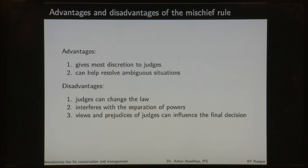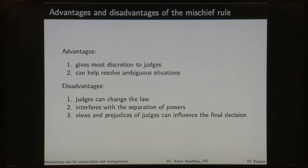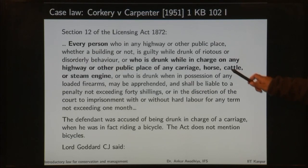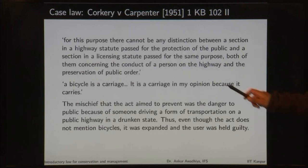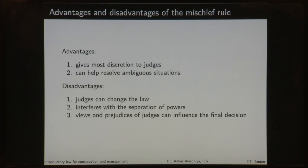The mischief rule gives the most discretion to judges and can help resolve ambiguous situations. However, it permits judges to change the law — in Quirkery versus Carpenter, the law did not mention bicycles but the judge ruled a bicycle is a carriage, effectively changing the law. This interferes with the separation of powers, and the views and prejudices of judges can influence the final decision.